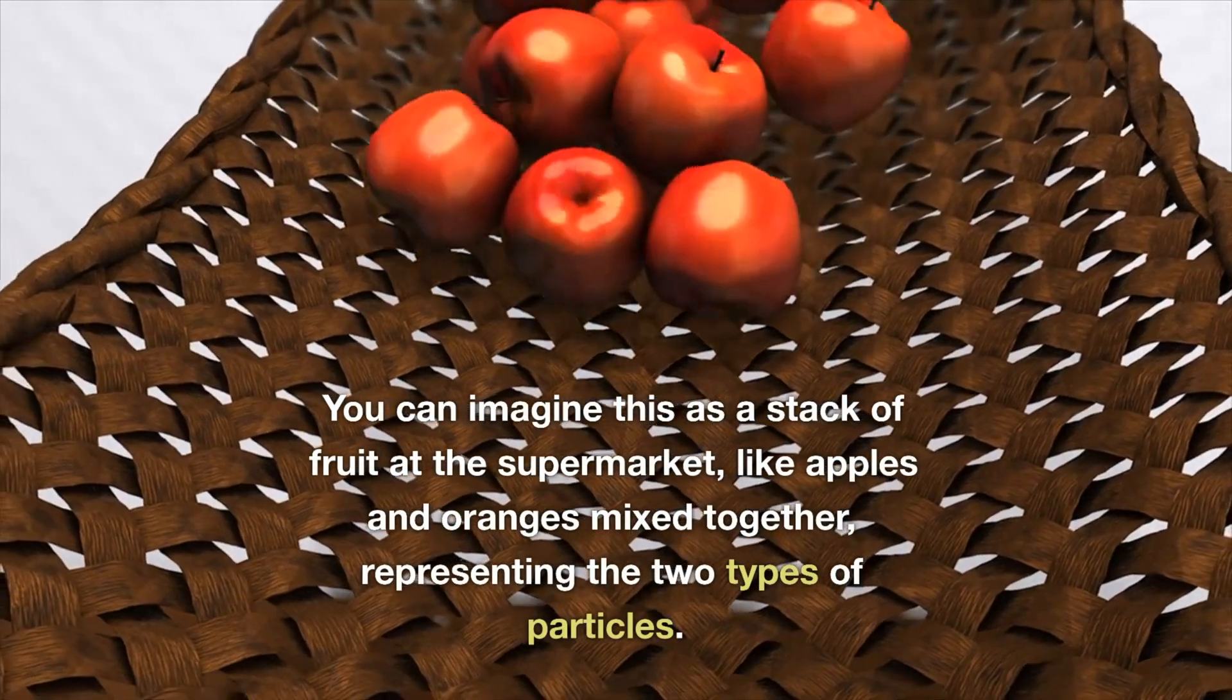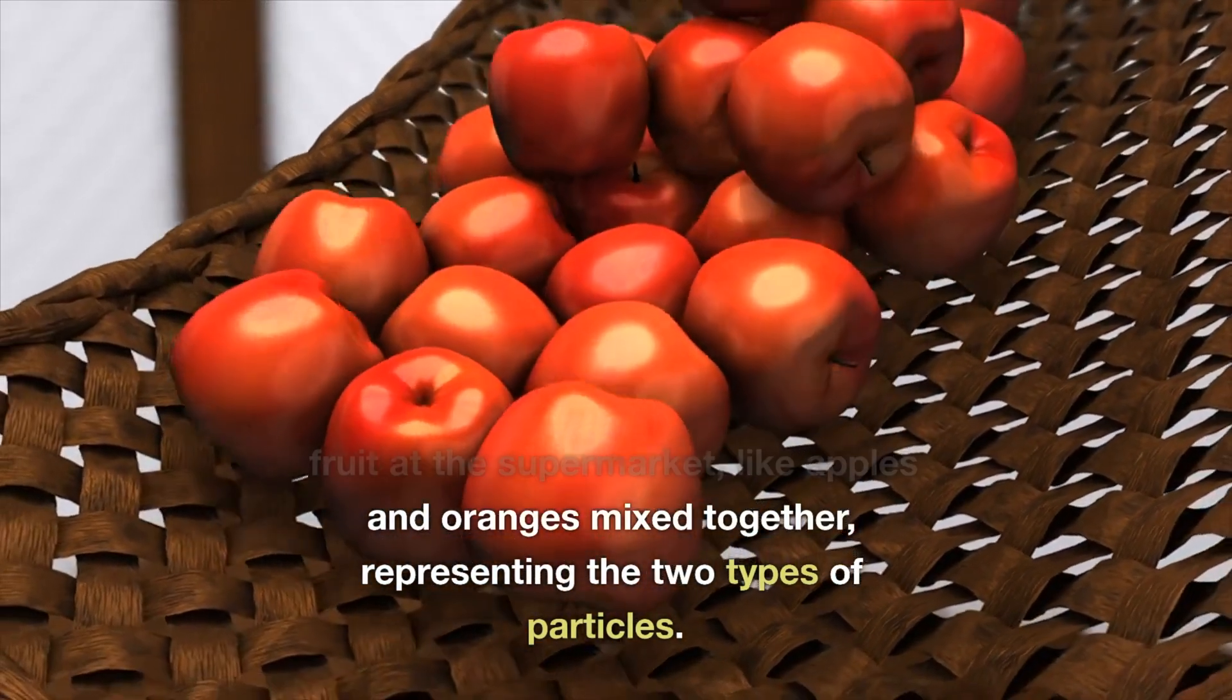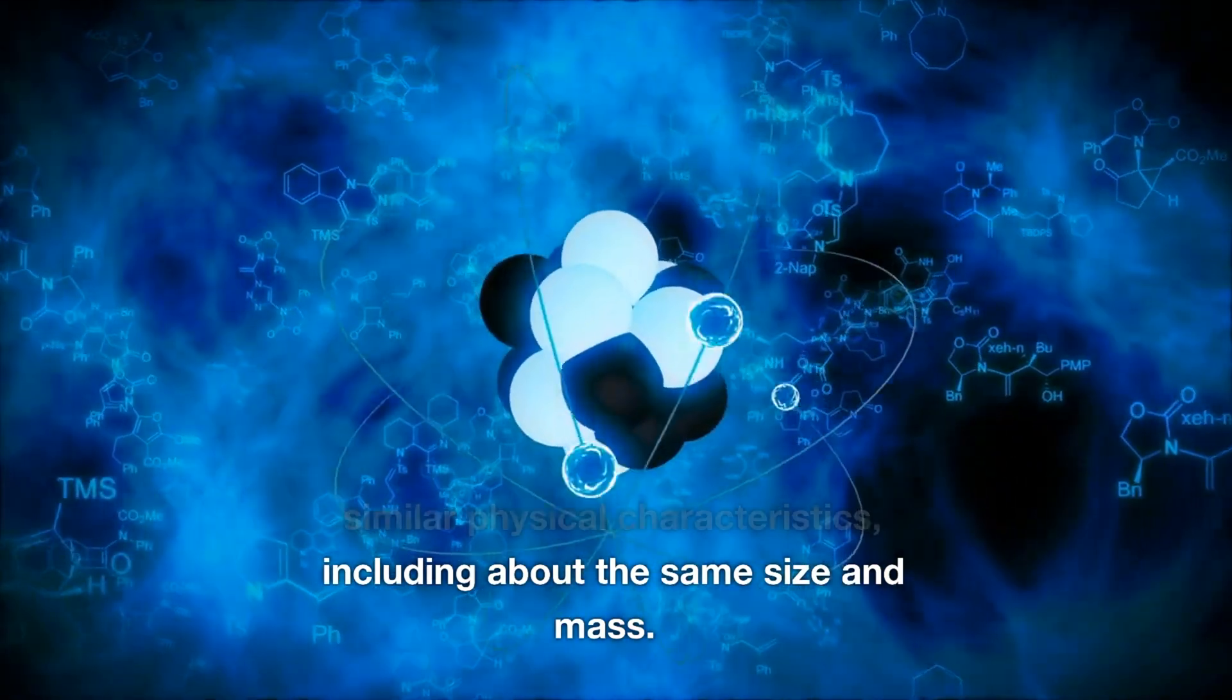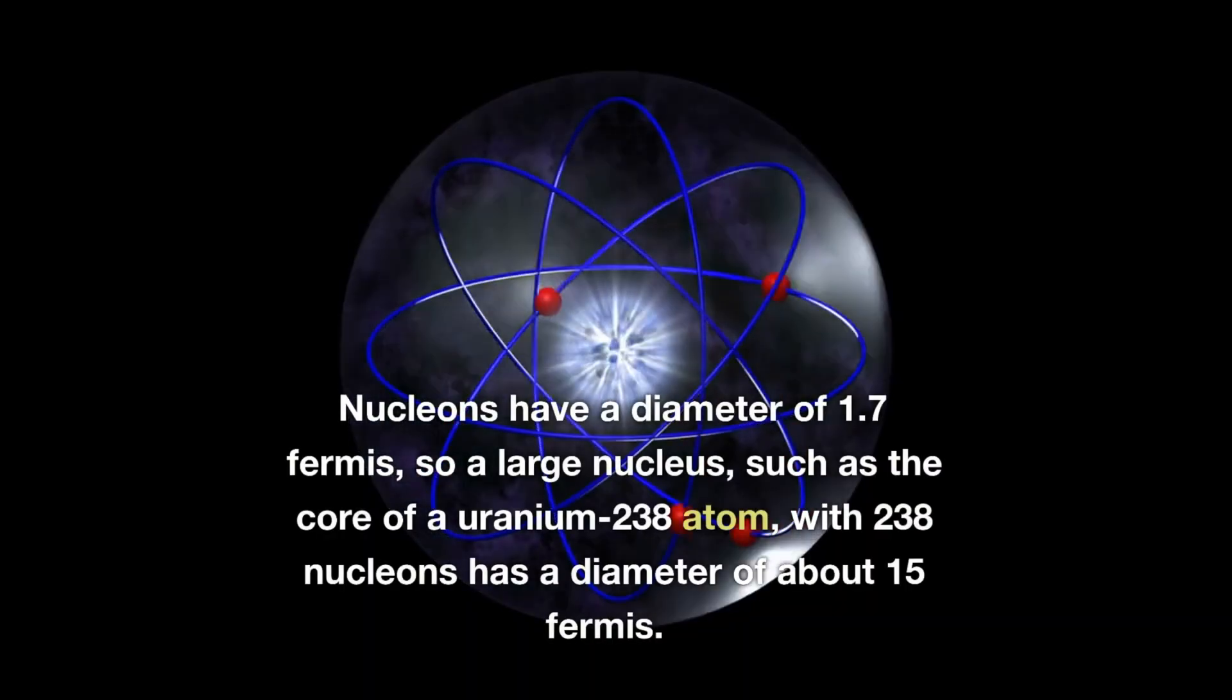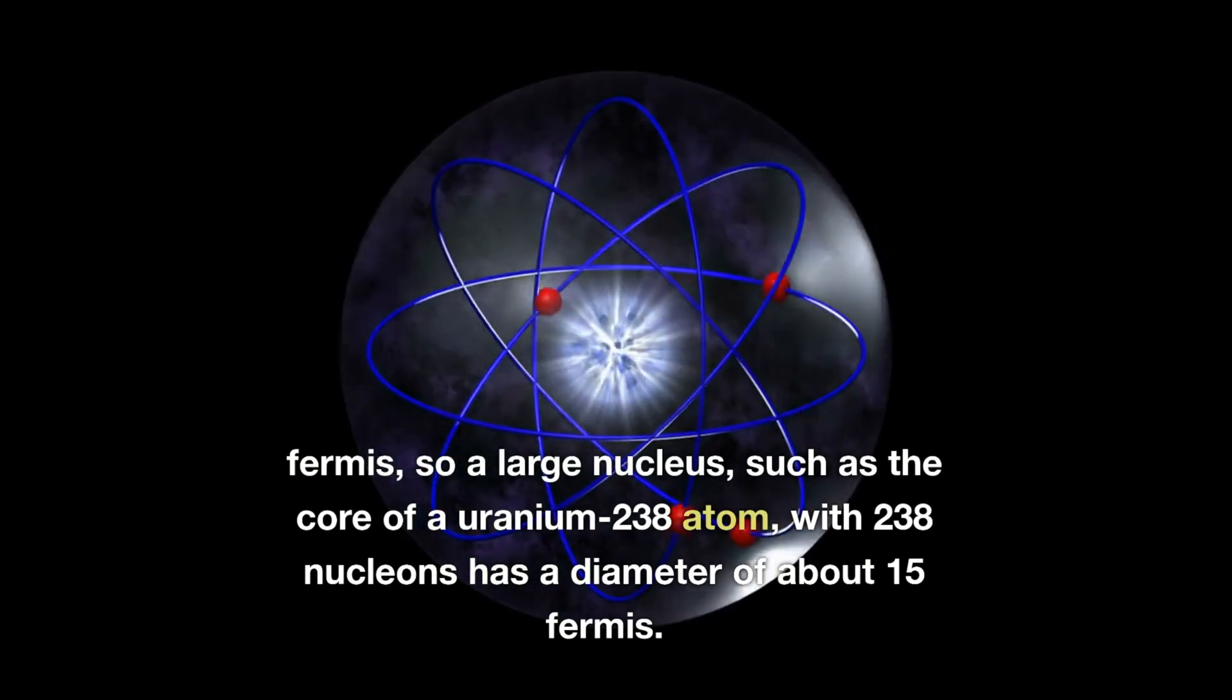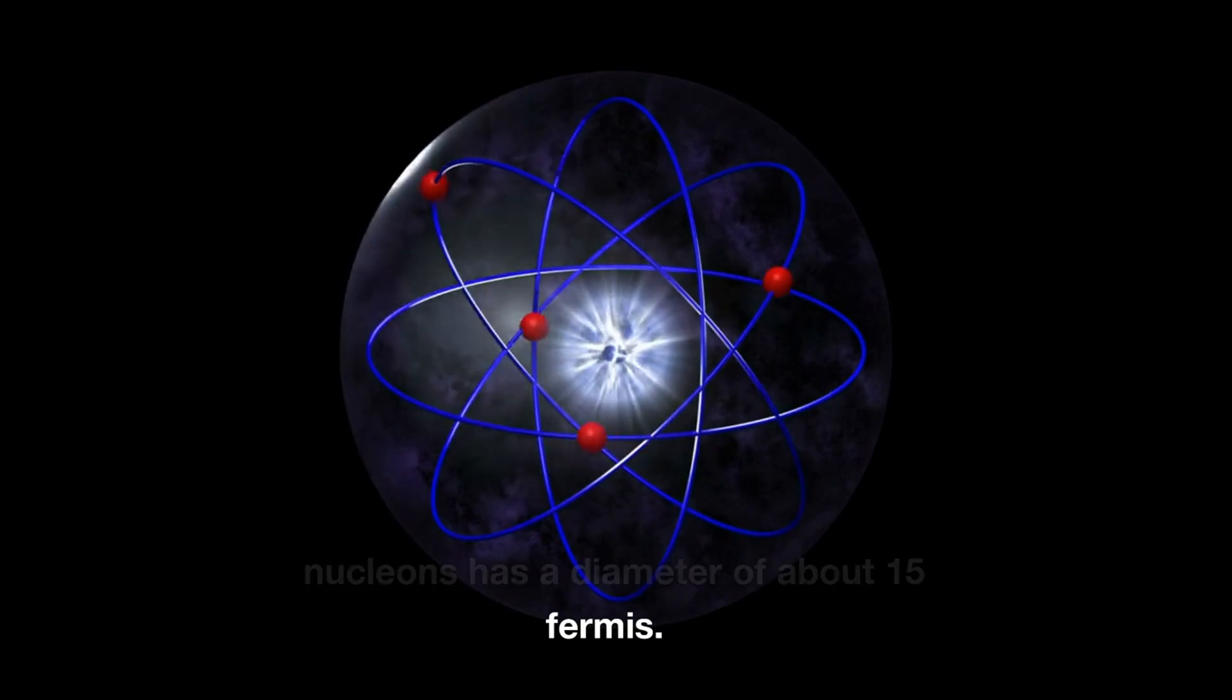Within the nucleus itself, the protons and neutrons are tightly packed. We refer to them as nucleons. You can imagine this as a stack of fruit at the supermarket, like apples and oranges mixed together, representing the two types of particles.